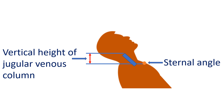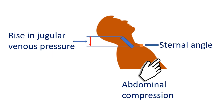But if the venous pressure is elevated, evaluation in the sitting position is possible. The vertical distance of the upper level of the pulsations above the sternal angle is checked and measured in centimetres of JVP. Sometimes JVP may be so high that the upper level may not be visible — it may be visible in the standing position in such cases, and pulsations of the earlobe will be noted.